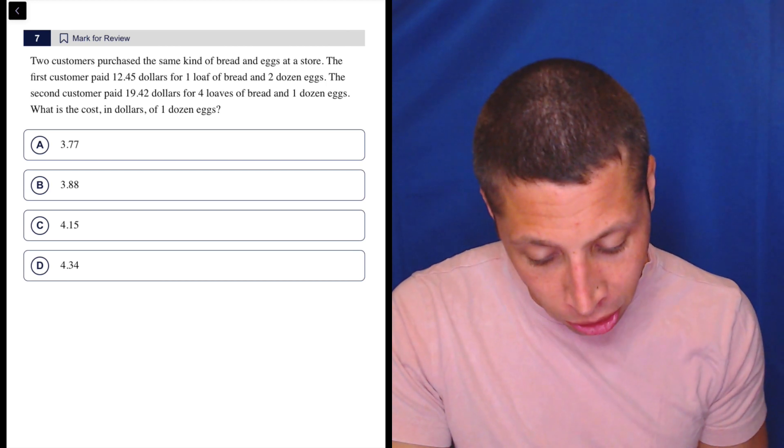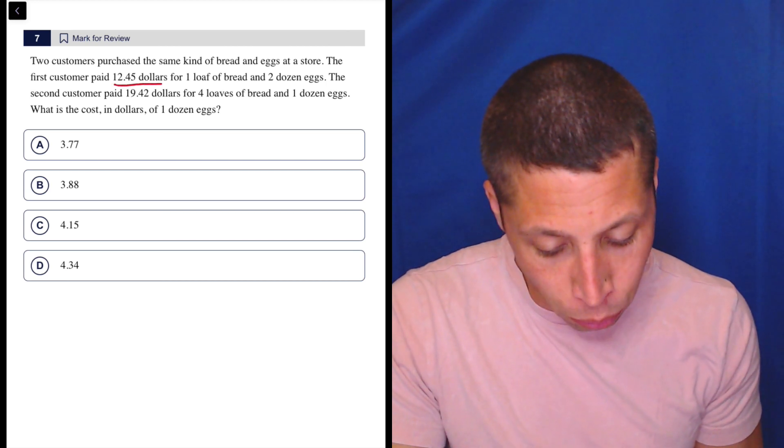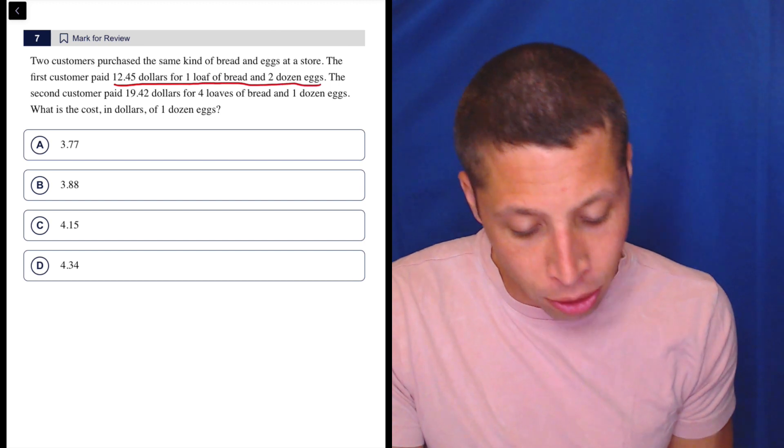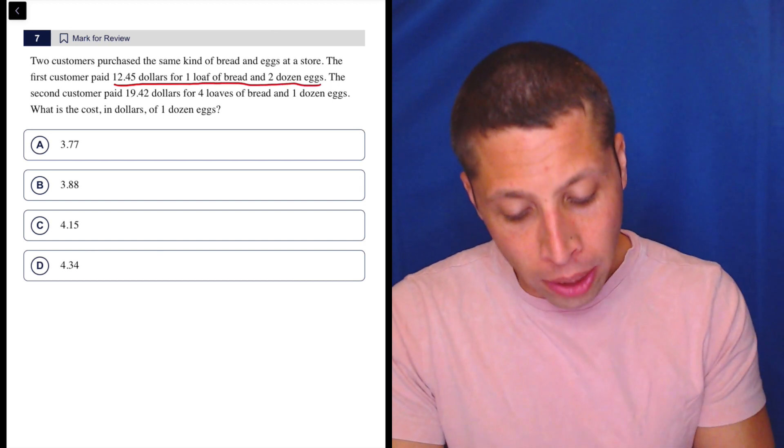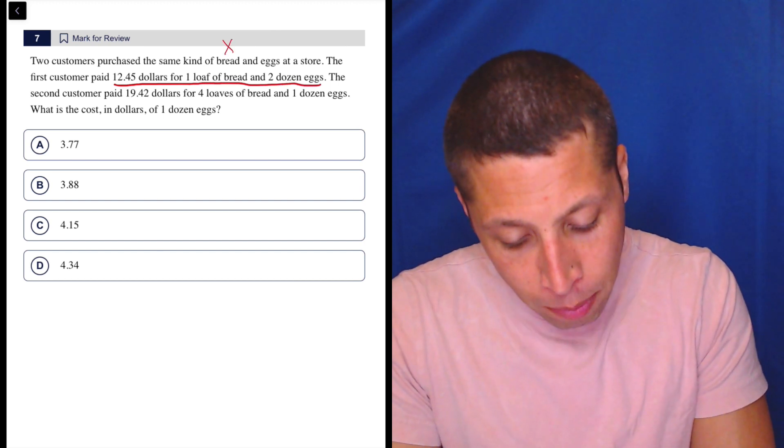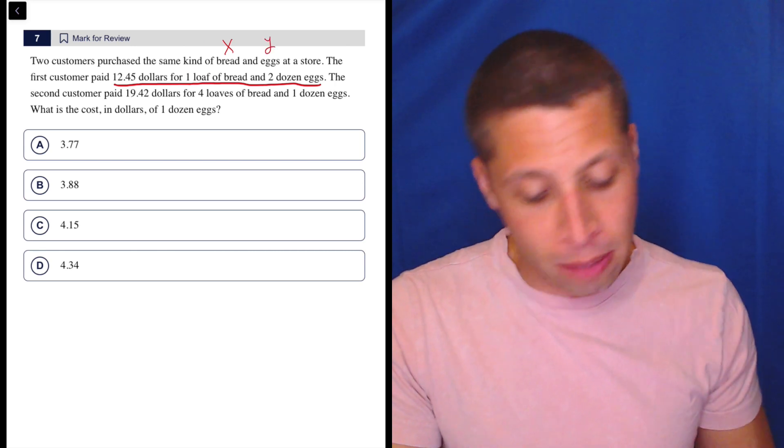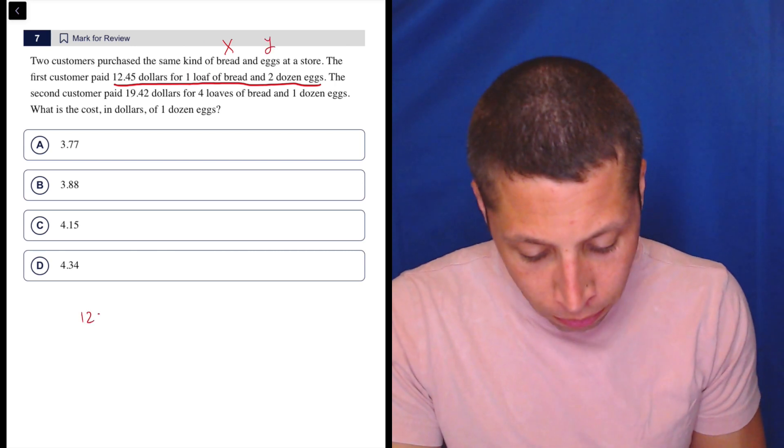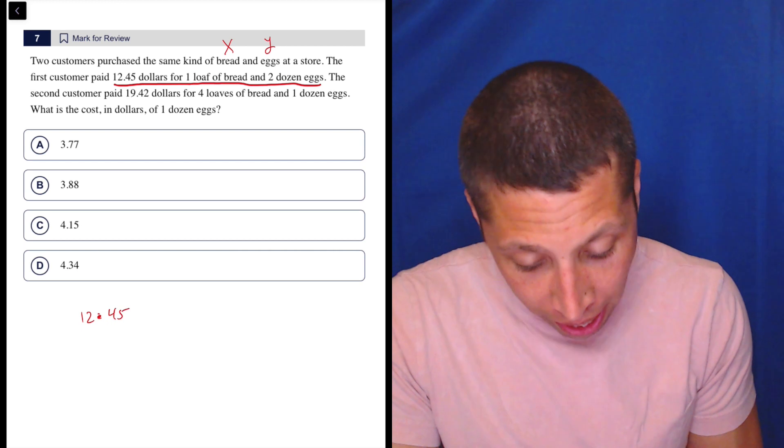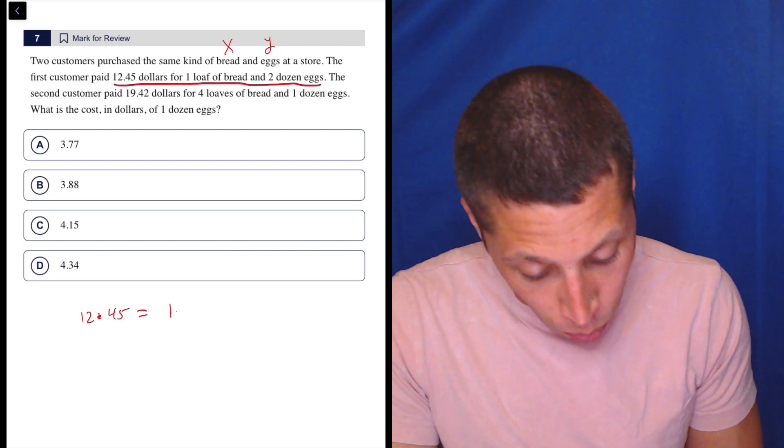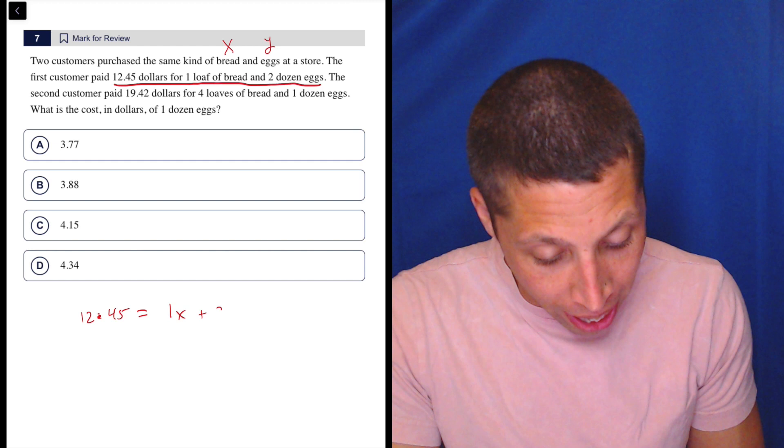So I have two equations here. The first customer paid $12.45 for one loaf of bread and two dozen eggs. So first of all, let's be really clear that the bread is my X and the eggs is my Y.